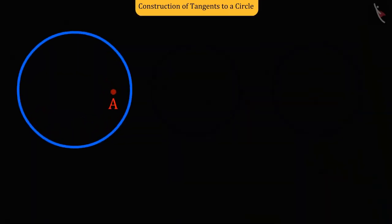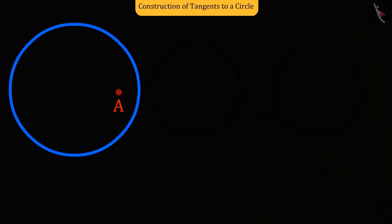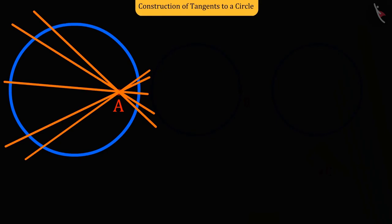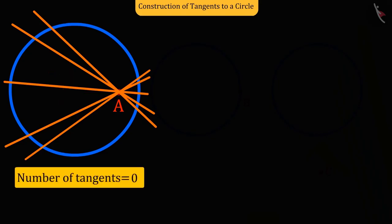Here in this case, the point is inside the circle. And as we have seen in the previous lesson, from a point inside the circle, the tangent line cannot be drawn on the circle. So the number of tangents here will be zero.